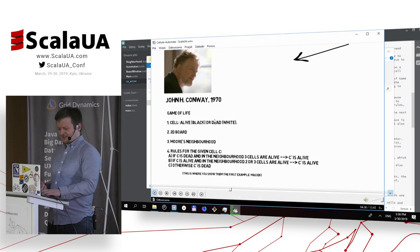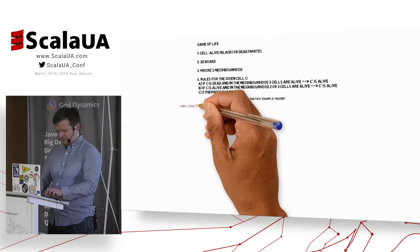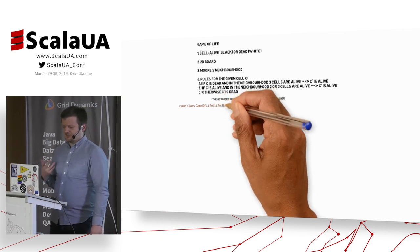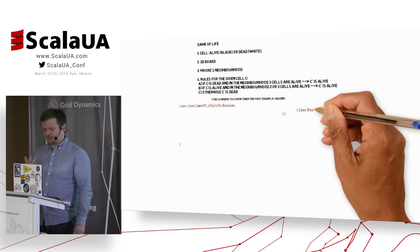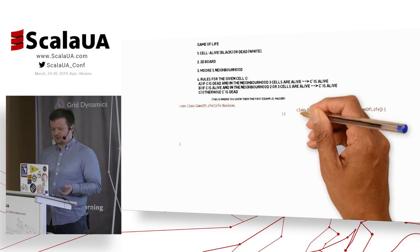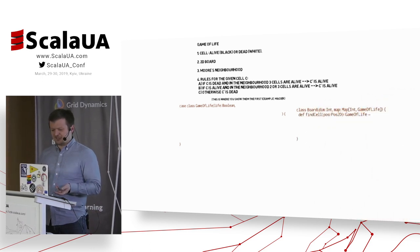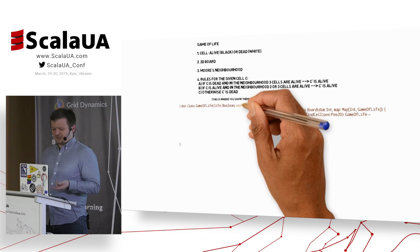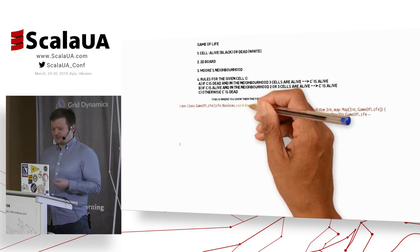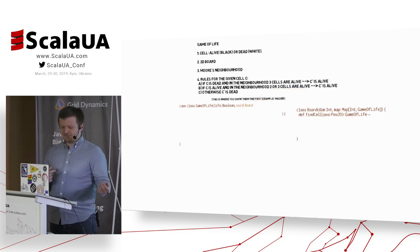So how to implement it? In Scala we can create a small case class. Let's call it Game of Life, and we can create a board for that case class. There will be just one field, Life, and the board will have a method for finding cells in the neighborhood.